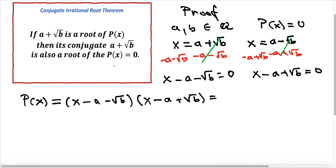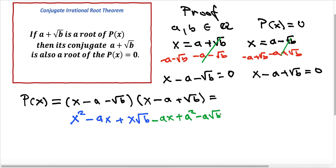Now we distribute. x times x is x squared. x times minus a is minus ax. x times plus square root of b is plus x square root of b. Minus a times x is minus ax. Minus a times minus a is plus a squared. Minus a times plus square root of b is minus a square root of b. Negative square root of b times x is minus x square root of b. Negative times negative gives plus a square root of b. And negative times positive gives a negative. Square root of b times square root of b is b.